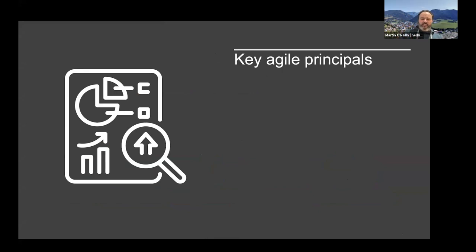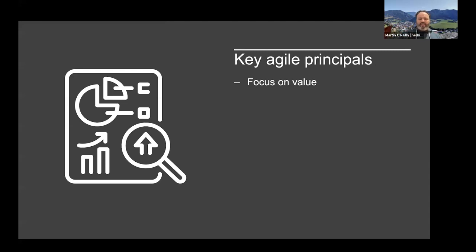There's a whole agile manifesto with 12 principles. I'll give you a slightly distilled, paraphrased version that carries the important features. The first principle is focus on value. Each iteration we're looking at doing the thing we can learn the most from, or that provides the most value to end users — whether that's customers, a research paper output, or something that lets others use the methods we've developed.